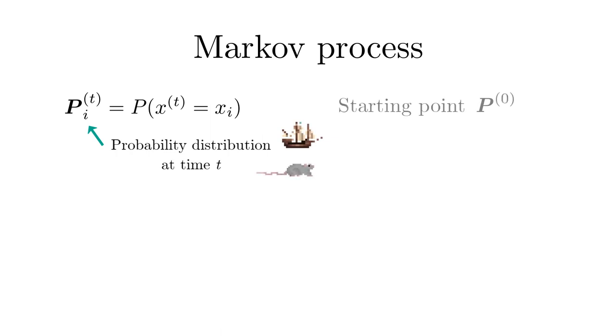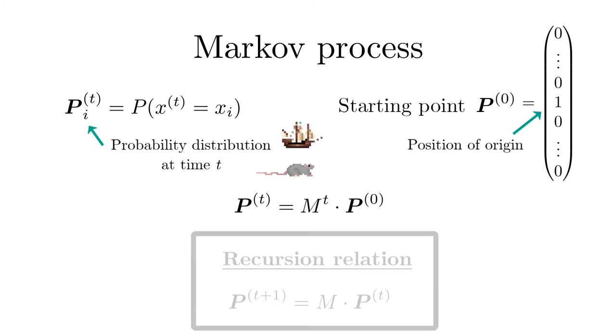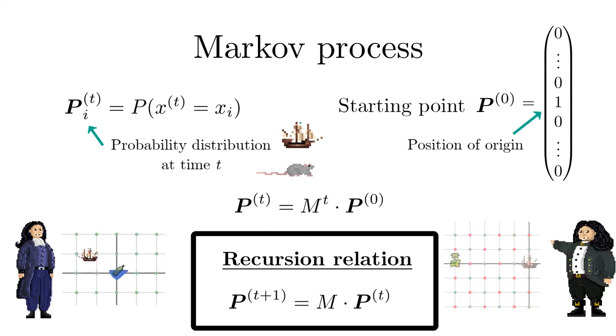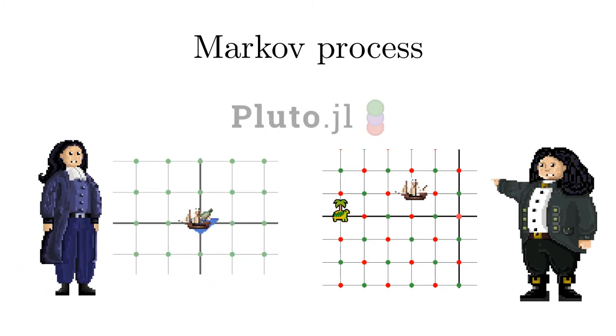The key object we want to determine with Markov processes is the probability distribution of the position of the ship or the rat after t time steps when we know its starting point. At time zero the probability vector has one nonzero entry only at the position of the origin. At any later time t the probability vector follows from the recursion relation. So this illustrates how Markov processes can be used. You can also treat the question of first return or first arrival by the Markov matrices or one can generalize the concept to more general hopping probabilities. In the interactive notebooks you can examine how to derive these Markov matrices and how to apply them.